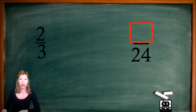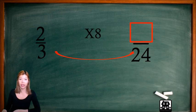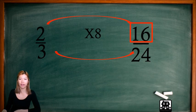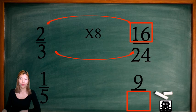Let's try this example. 3 times 8 is 24, so we multiply the top by 8 to get an equivalent fraction. 2 times 8 is 16, so these are equivalent fractions. Let's try another: 1 over 5. 1 times 9 is 9, so we multiply the bottom by 9. 5 times 9 gives us 45.